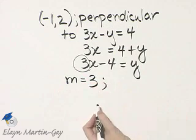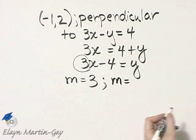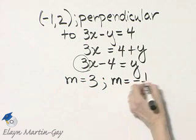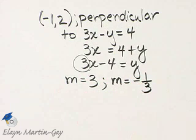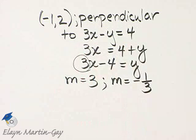I want a line perpendicular, so I'll use a slope that's the negative reciprocal of this slope. That would be the negative reciprocal, negative 1/3. Any line with a slope of negative 1/3 will be perpendicular to the graph of this line.